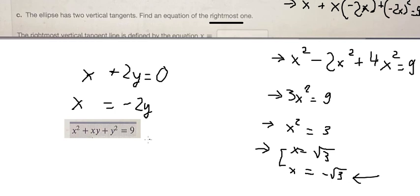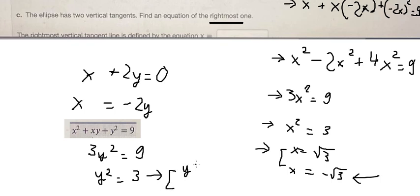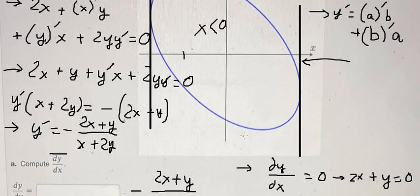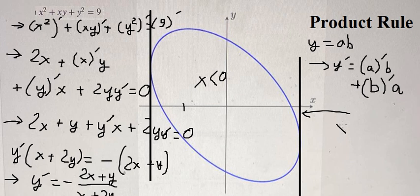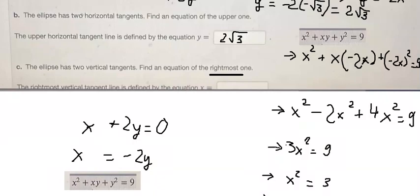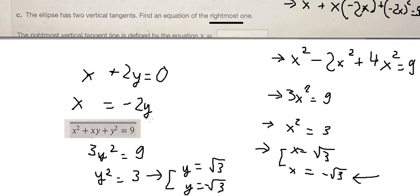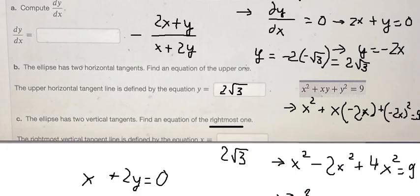After simplifying everything, we have 3y² equals 9, so y² equals 3. Taking the square root of both sides gives y equals plus or minus the square root of 3. Since we want the right vertex where x is greater than zero, we select the value that gives a positive x. Substituting back, x equals 2 times the square root of 3. That is the answer for all parts. This is the end — thank you for watching.